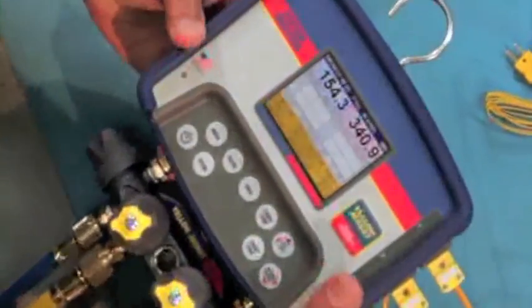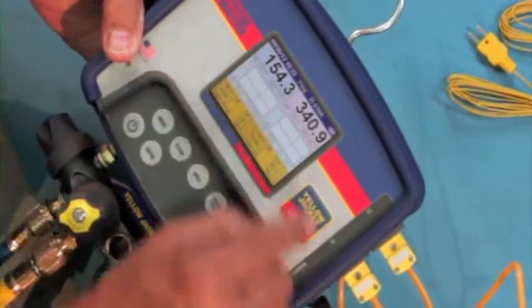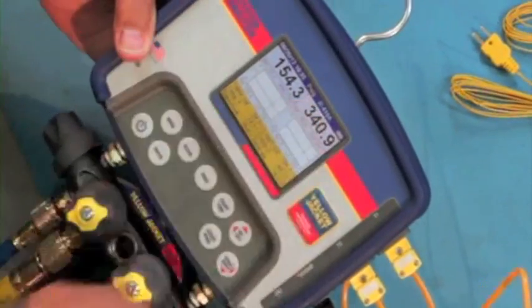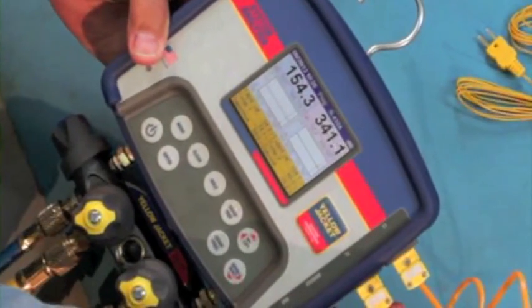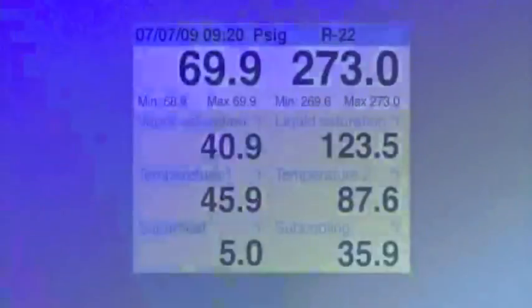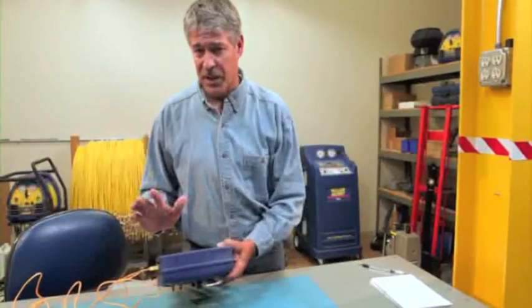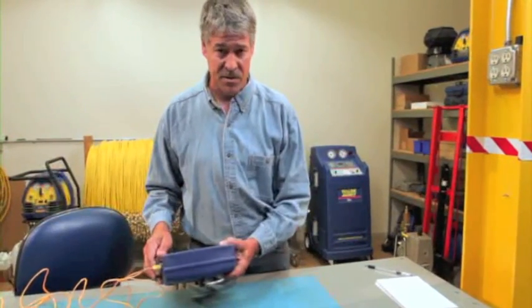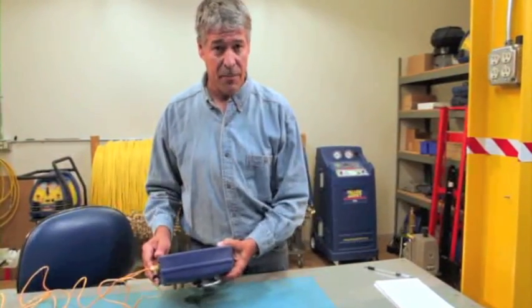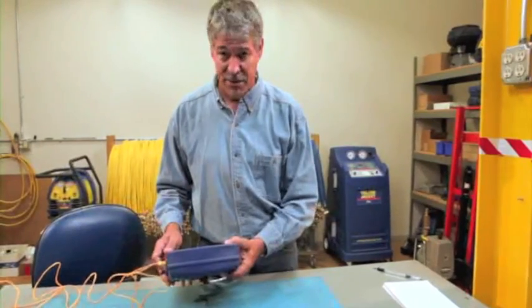If you're using a refrigeration system analyzer, simply select the appropriate refrigerant and connect the hoses and thermocouples to the system for an immediate reading. The unit will automatically determine saturation temperatures and calculate the superheat and subcooling. For the most precise readings, make sure your refrigeration system analyzer has elevation compensation settings and accurate temperature probes.